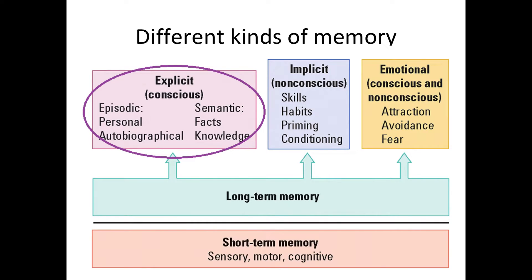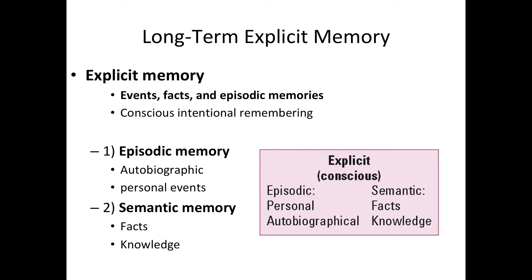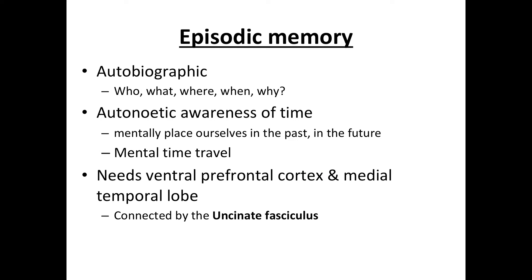Explicit memory can be split into episodic memory and semantic memory. Episodic memory is uniquely different from other neurocognitive memory systems in that it is memory of life experiences centered around the person himself or herself. This information includes events and facts, and it is a conscious, intentional remembering of events, facts, and knowledge. Episodic memory includes autobiographical information — the who, what, where, when, and why.